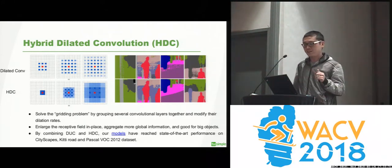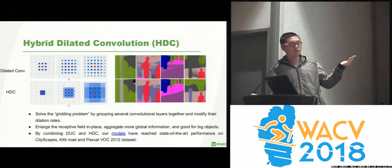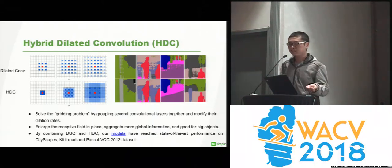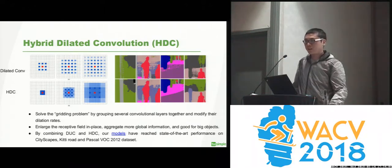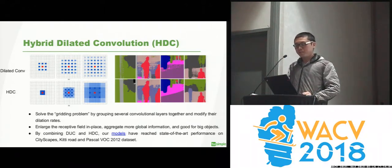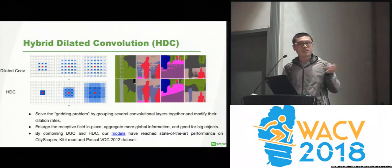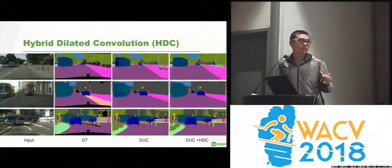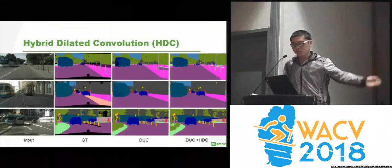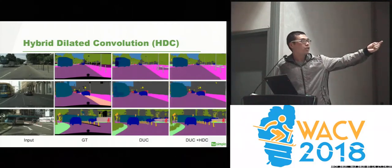Our technique is very simple: you just change the dilation rate of the subsequent layers — for example, changing the rate from 2, 2 to 1, 1, 3. By doing that, you get a much smoother result. There's also another benefit: we can use arbitrary dilation rates across different layers, which increases the receptive fields in the network and achieves very good performance for large objects. For example, in the leftmost column, you can see much better results for buses, trains, and trucks.